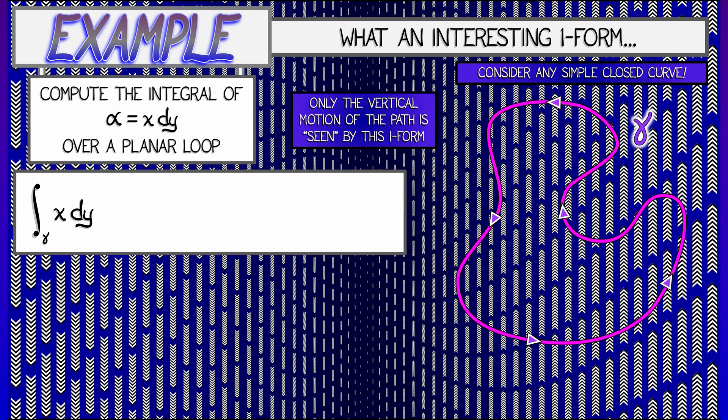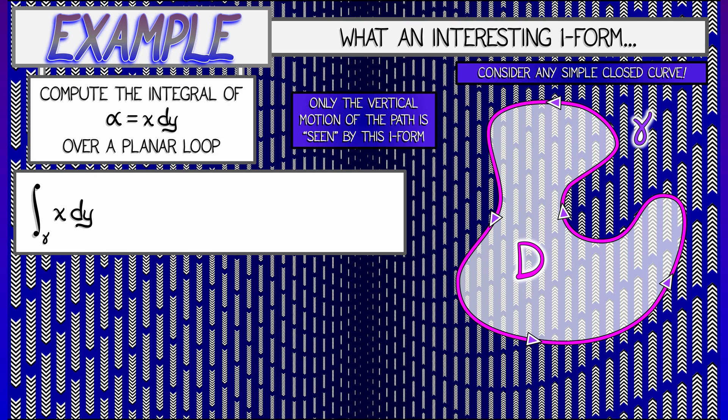Green's Theorem says what you can do is fill in that loop with a two-dimensional domain, with d that has gamma as its boundary. And then, integrate with respect to area. What is the integrand?